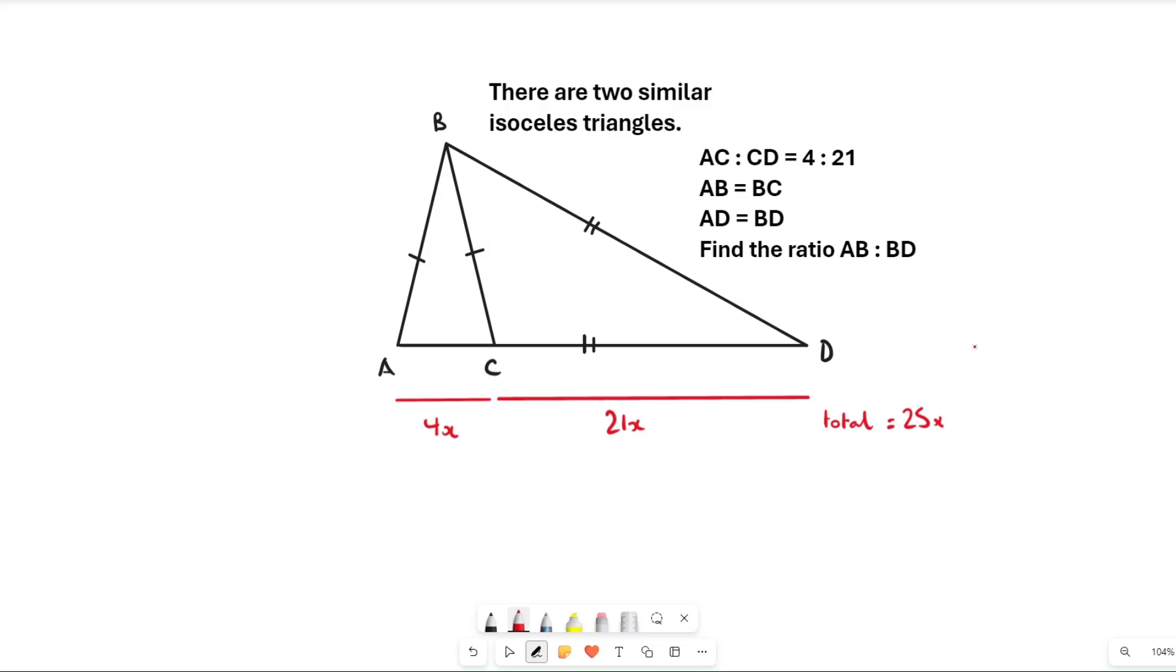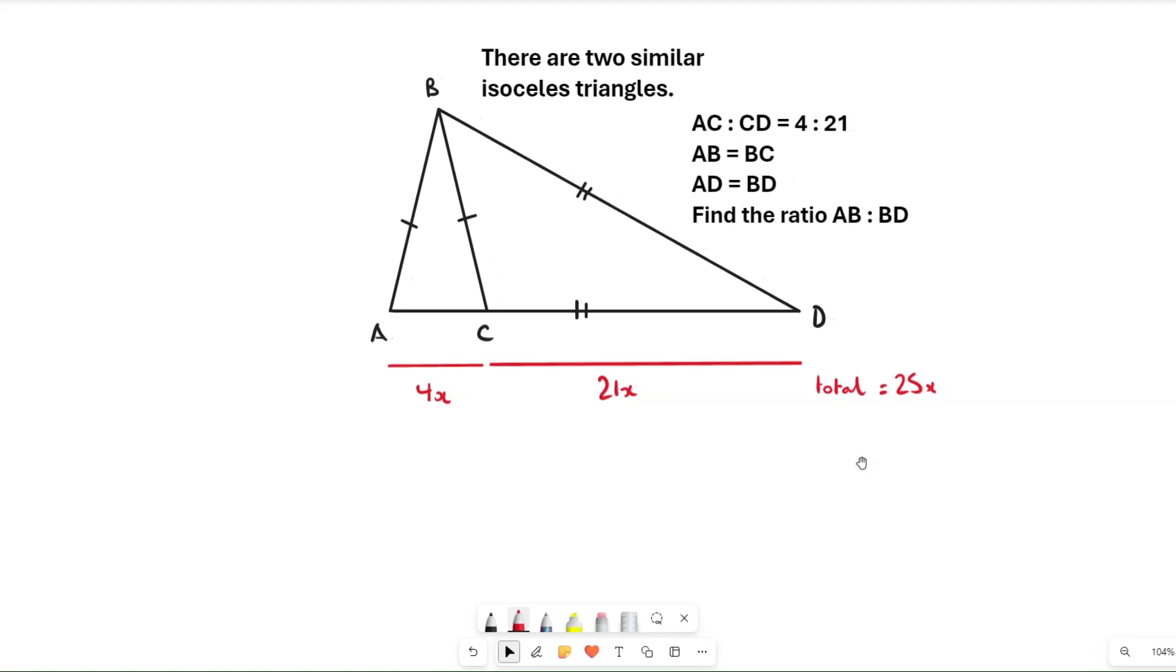This is going to be 21x and the total is going to be 25x. The x is just to make it clear that these aren't absolute values. Since we know that this is 25x, I'm going to quickly recap some similar shape stuff.